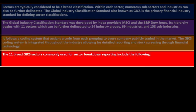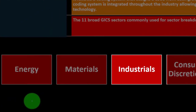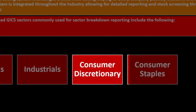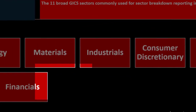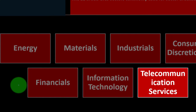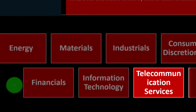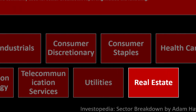The 11 broad GICS sectors commonly used for sector breakdown reporting include: Energy, Materials, Industrials, Consumer Discretionary, Consumer Staples, Healthcare, Financials, Information Technology, Telecommunication Services, Utilities, and Real Estate.